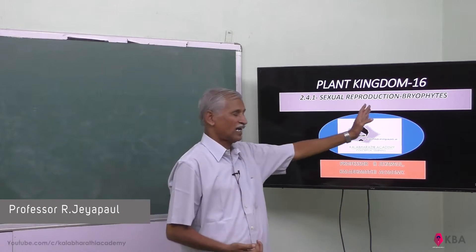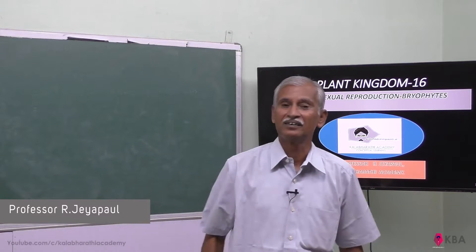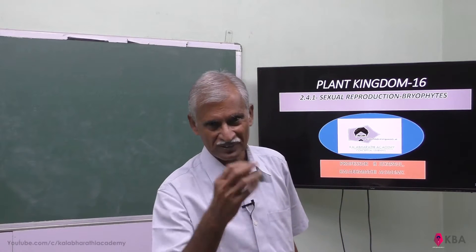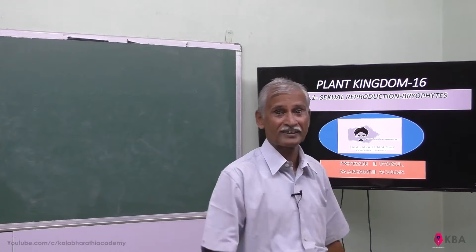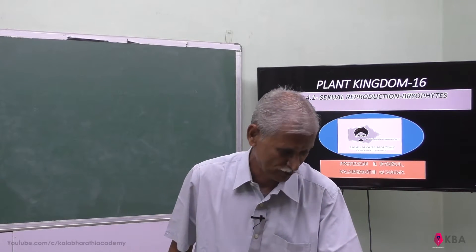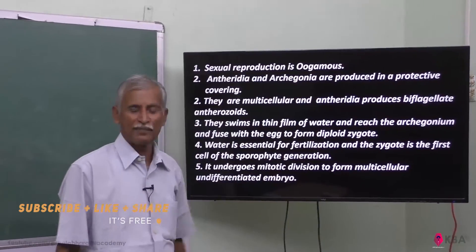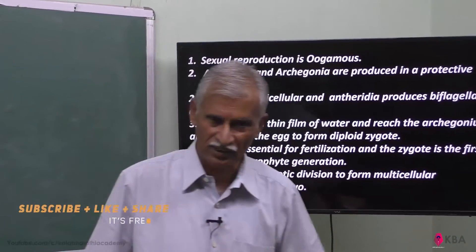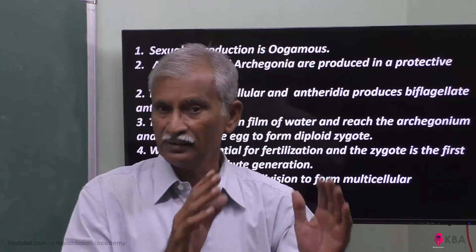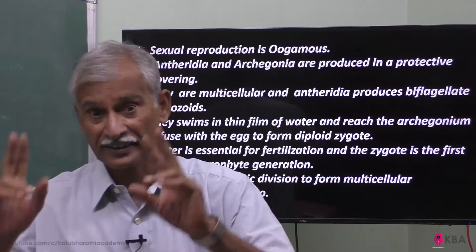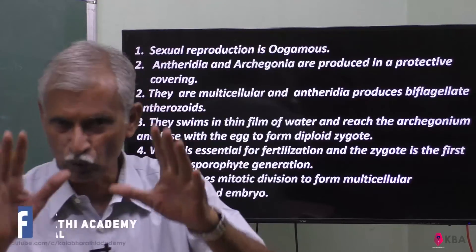In bryophytes, sexual reproduction is oogamous. Why oogamous? Because the two gametes are morphologically and physiologically dissimilar — that is why it is oogamous.